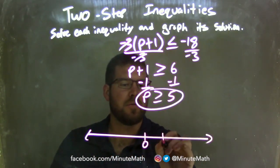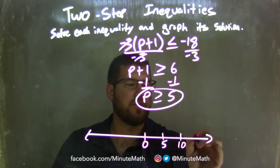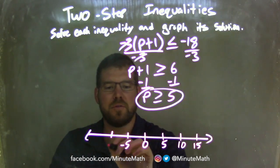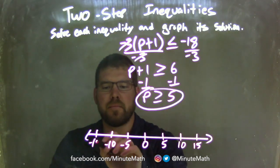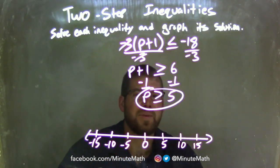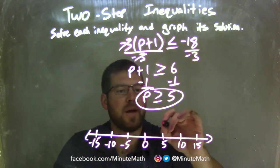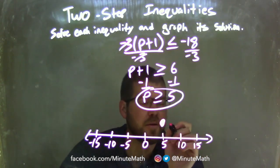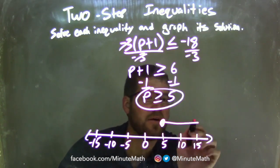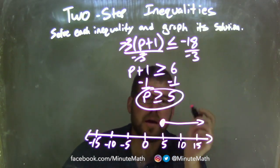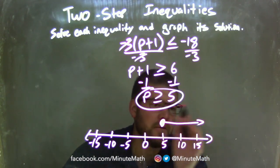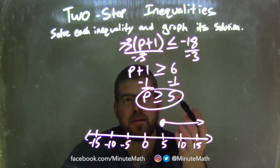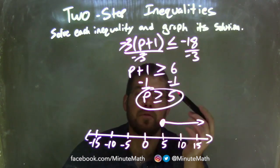Now let's graph it. I'm going to have 0, 5, 10, 15 — going by 5s, keep it consistent whatever units you choose. Since p is greater than or equal to 5, we have a closed circle at 5 because it can equal 5. Then it's greater than, so our arrow goes to the right, representing all the values that p can be, as well as at 5. Our graph matches the final answer of p is greater than or equal to 5.